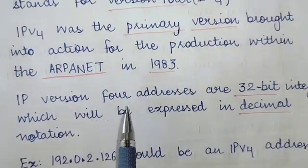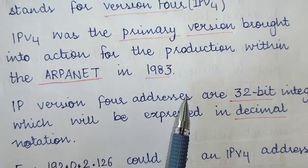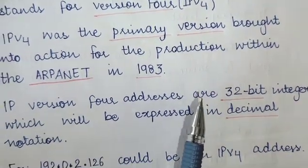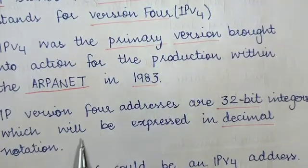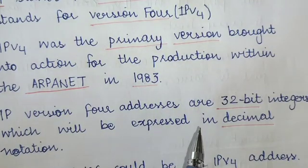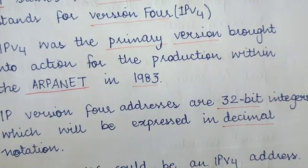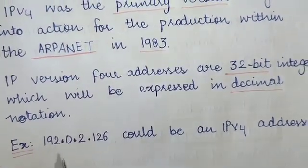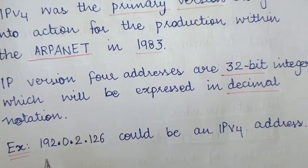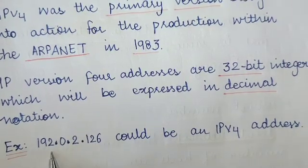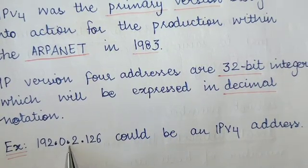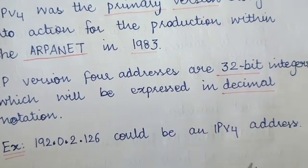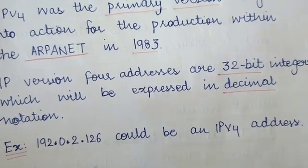IPv4 addresses are 32-bit integers, which are expressed in decimal notation, also called dot notation. An example of an IPv4 address can be like 192.0.2.126 — this is how an IPv4 address looks.